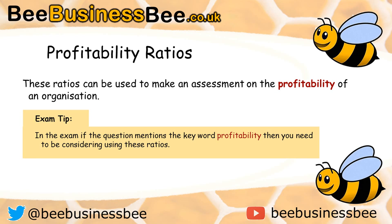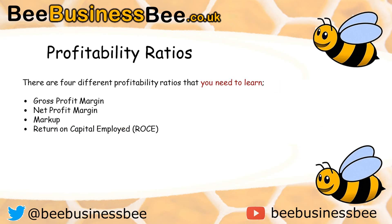There are four different ratios you need to learn and be able to use when we talk about profitability. These are the gross profit margin, the net profit margin, the markup, and the return on capital employed, sometimes called the ROCE. These are formulas you have to learn and use — remember the trigger word would normally be profitability from the exam question.